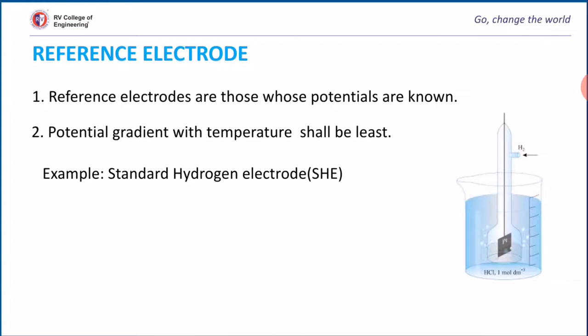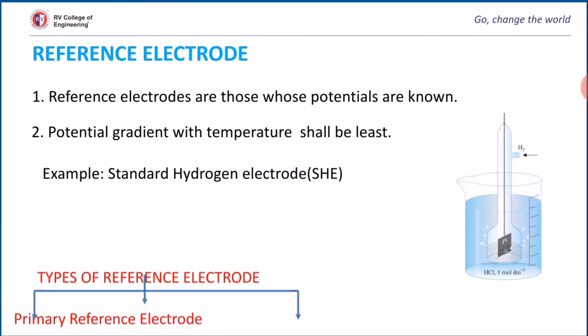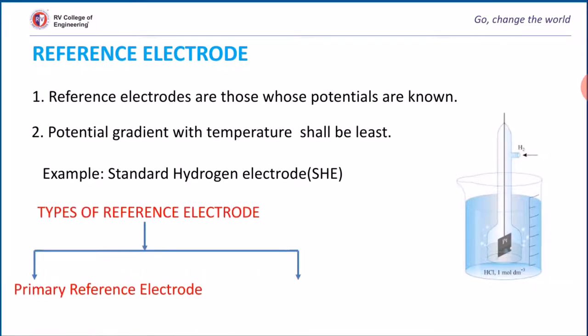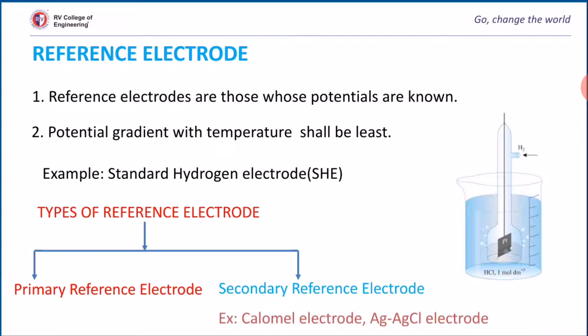Reference electrodes are classified into two types: primary and secondary. The calomel electrode is an example of a secondary reference electrode.